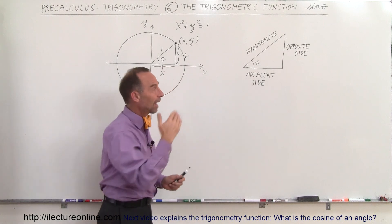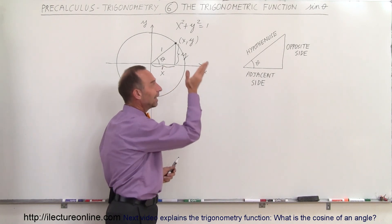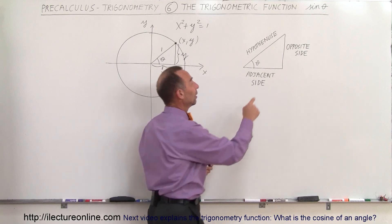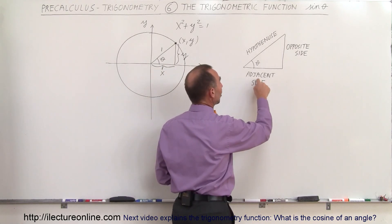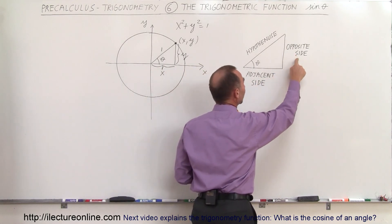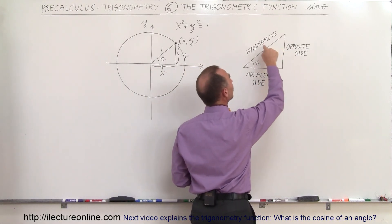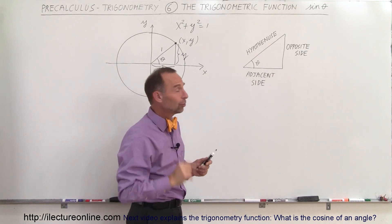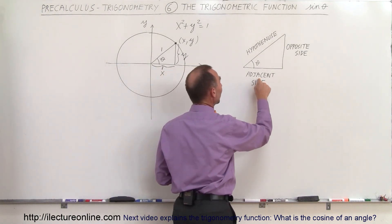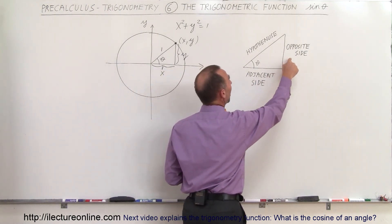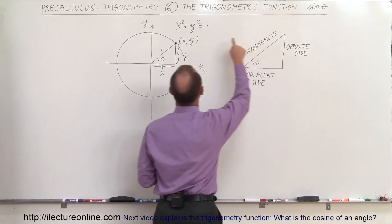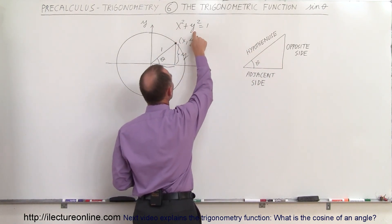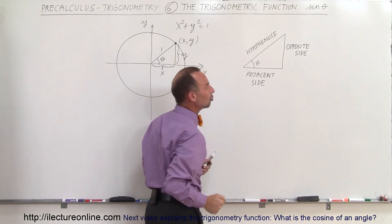That's how we define the opposite side, the adjacent side, and the hypotenuse. We know that the adjacent side squared plus the opposite side squared equals the hypotenuse squared. Since in this case the hypotenuse is equal to 1, the adjacent side squared plus the opposite side squared equals 1. Therefore, x squared plus y squared equals 1. Notice the relationship.